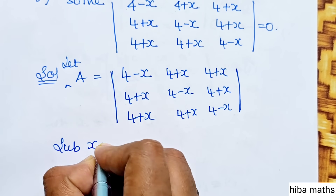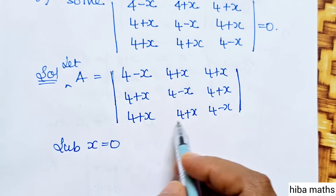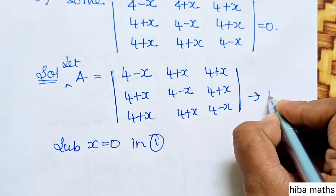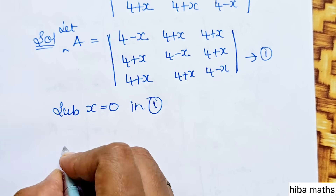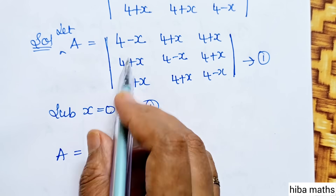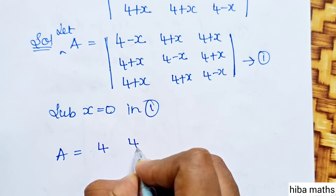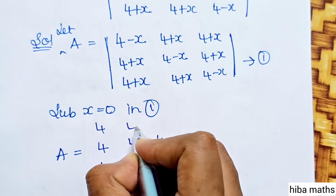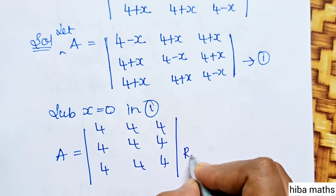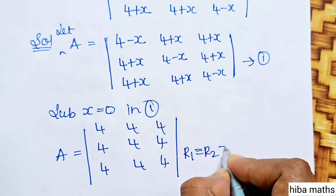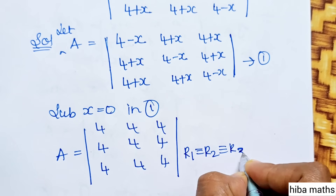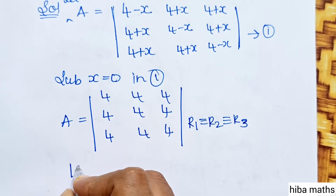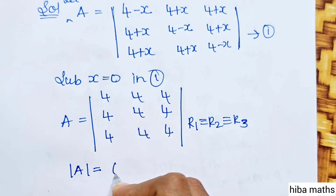Solving in x equal to 0. R1 is identical to R2, which is identical to R3. R1, R2, R3 are three identical. The value of R3 is 0.